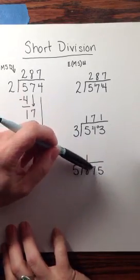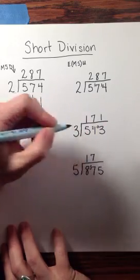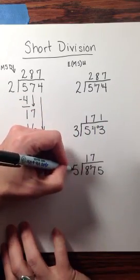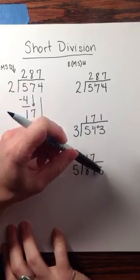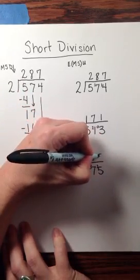5 would go into 37 seven times. 5 times 7 is 35, so that leaves us 2 left over. And 2 fits into 25 five times.